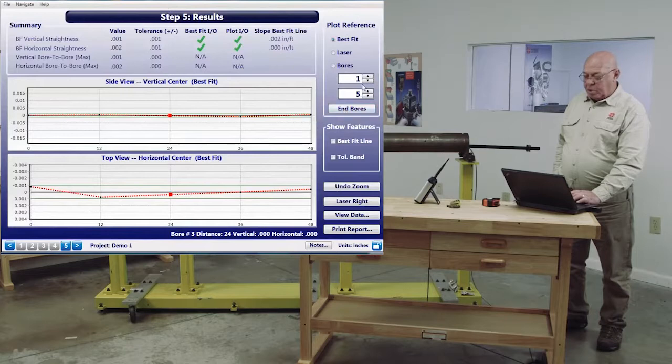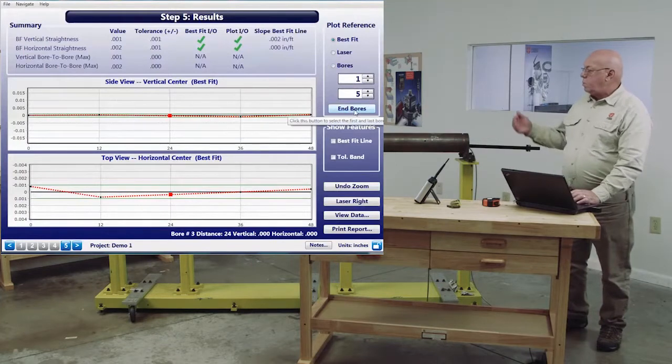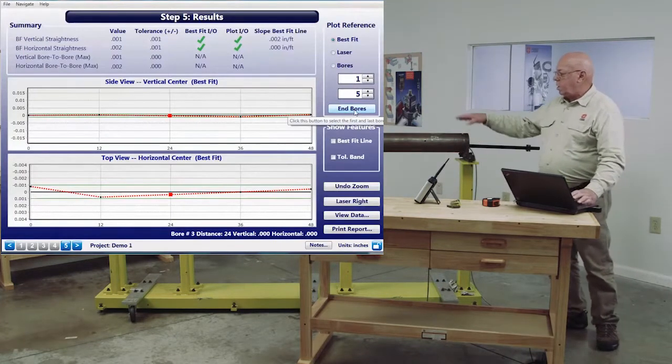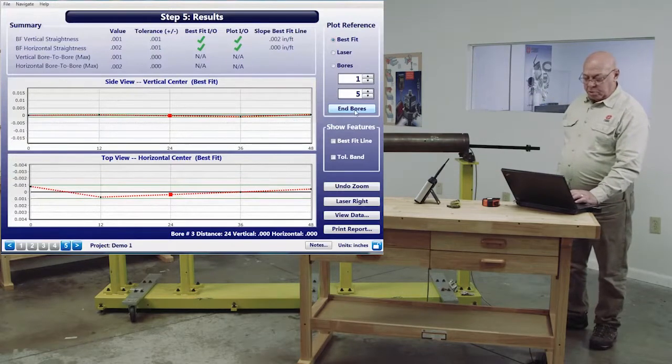One in five are end bores. So I can tell it bores one in five, or I can do end bores. Or I could say, well, I don't want to make this zero. I want to make one in the middle zero. So one, two, I can make bores five and three zero, and it'll pass that line through those.